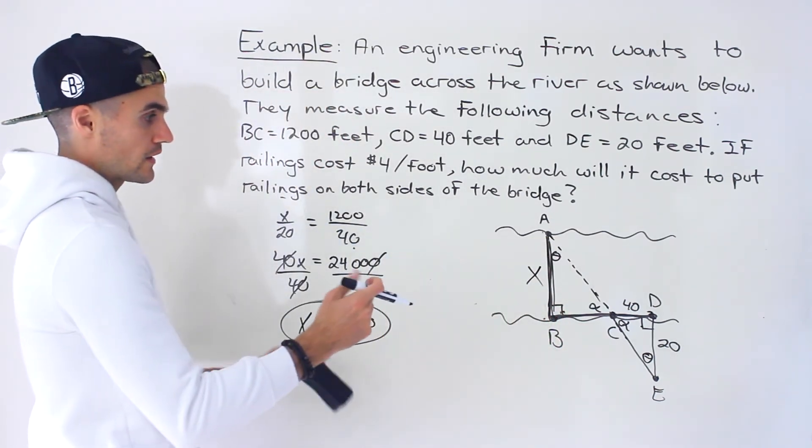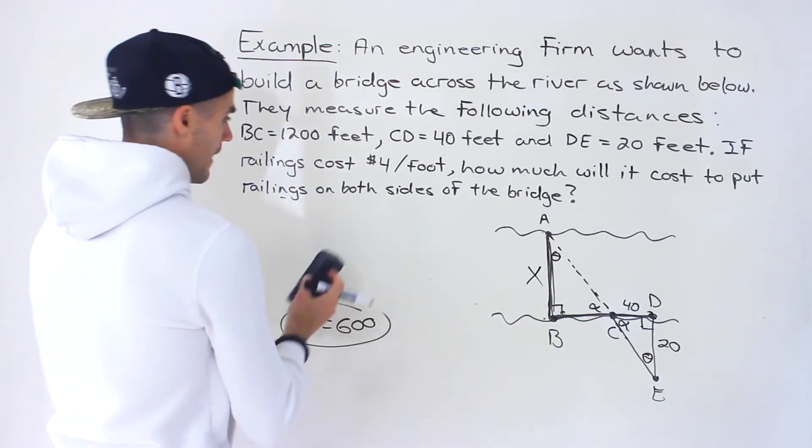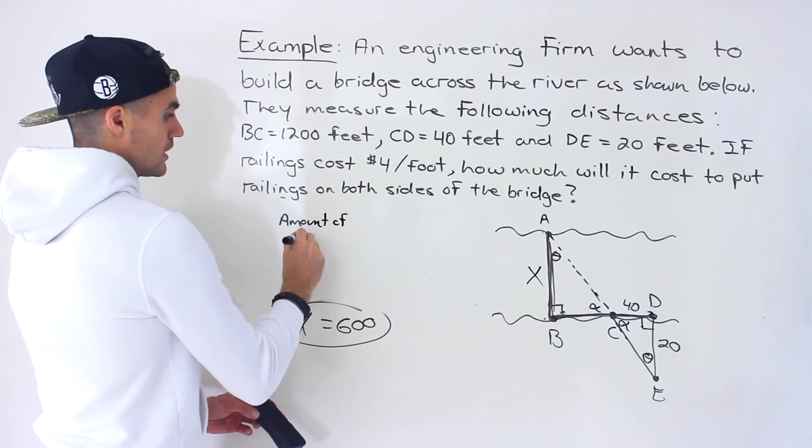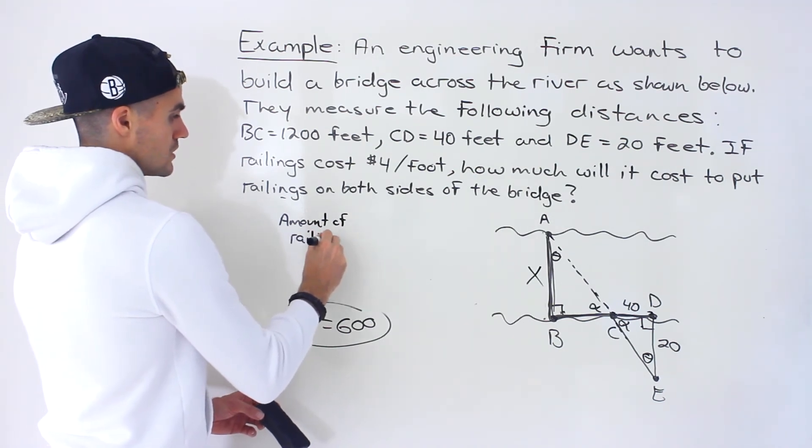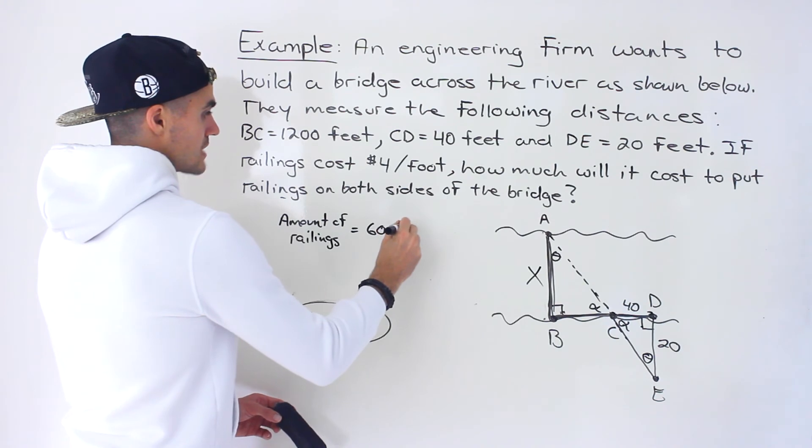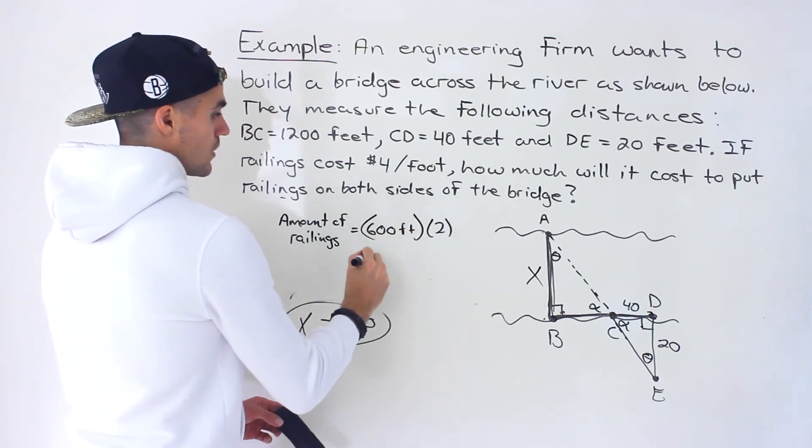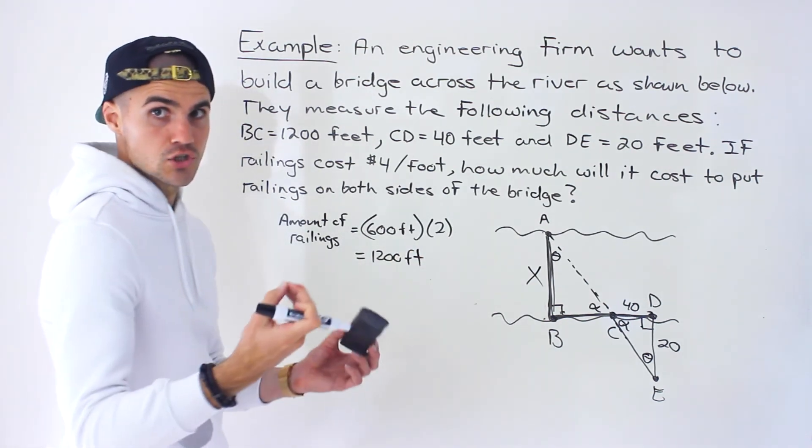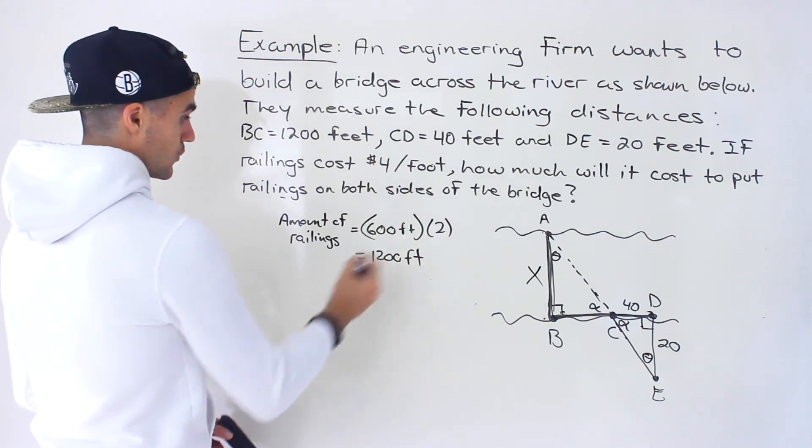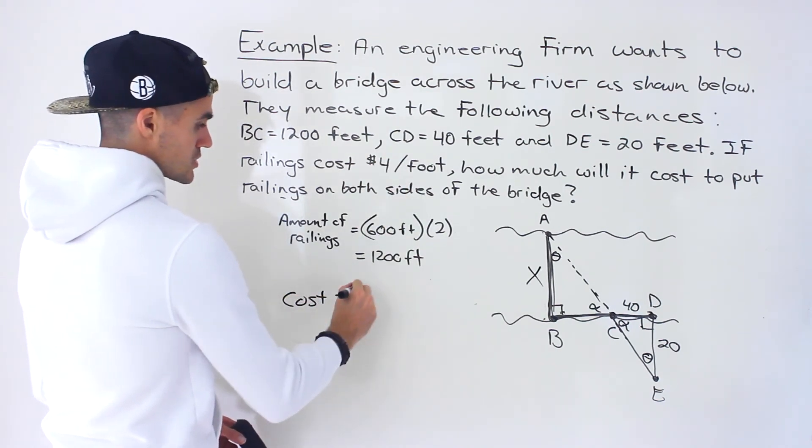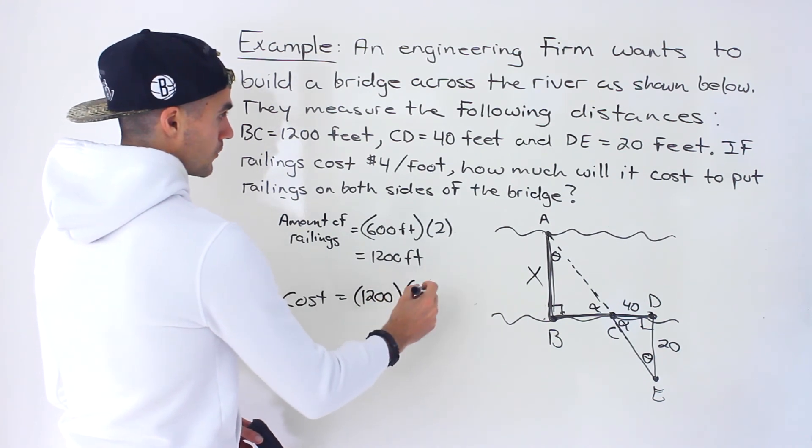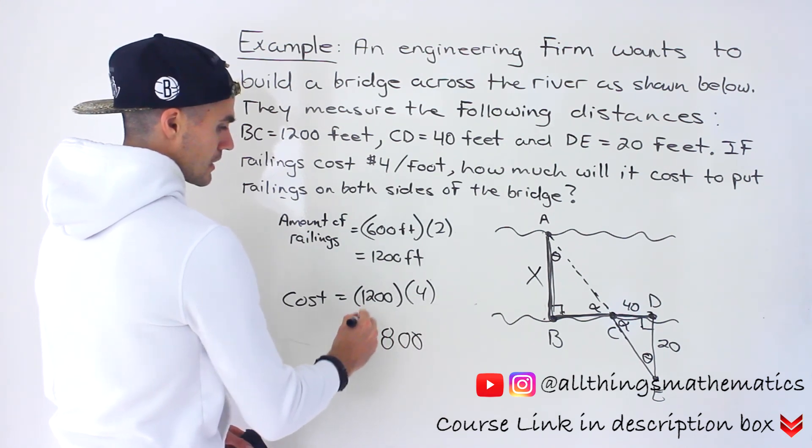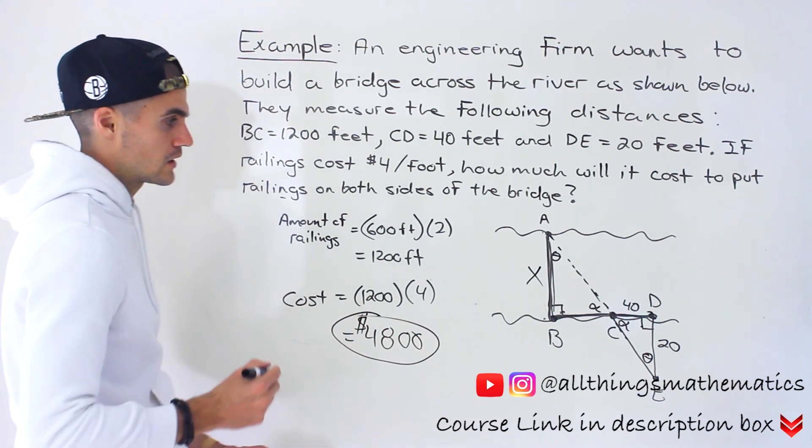However, we need to put railings on both sides, so the amount of railings that we need, because we're putting it on both sides of the bridge, is going to be 600 feet times two, which gives us 1200 feet. What's the cost going to be? Well, each foot costs four dollars, so the cost is going to be 1200 feet, the total amount of railings we need, times four, which gives us $4,800. That's the final answer.